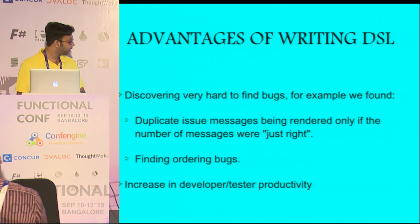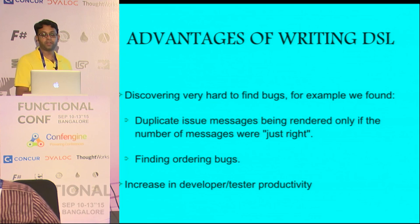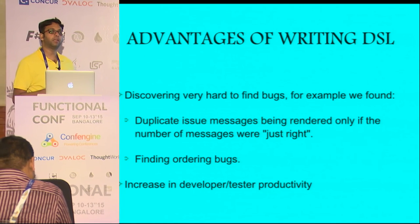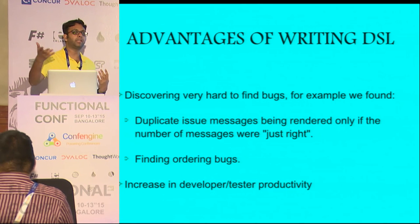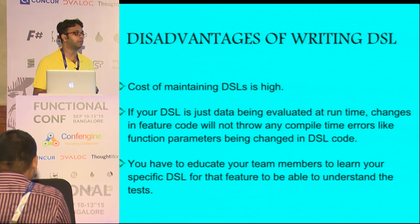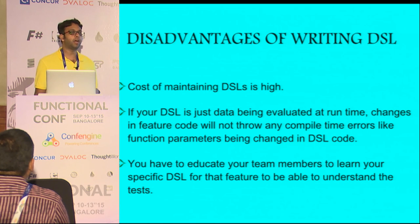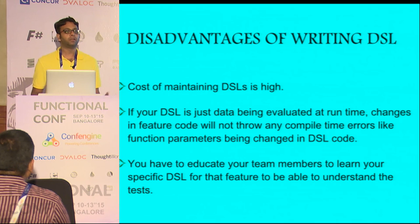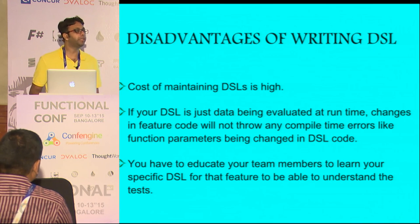What are the advantages of writing a DSL? It helps in finding really hard-to-find bugs — for example, we found duplicate issue messages where the order needs to be just right to find it. Finding ordering bugs is something we found, and it increased the productivity of developers and testers because I could share this code and directly say this is how you can reproduce the bug. The disadvantage is it adds high cost in maintaining the DSL. Right now I'm the only person who understands this DSL — if you have a bigger team you need to teach them. Another problem: if your DSL is just data and you make some mistake, you won't get a compilation error because it's just data. Unless it's actually being evaluated by a function, you won't get any error.